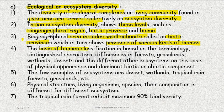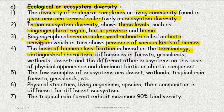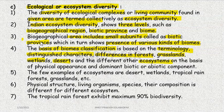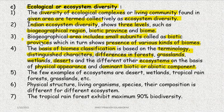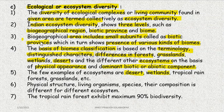The basis of biomes is distinguished characters — differences in forests, grasslands, wetlands, deserts, birds, and different other ecosystems. They are classified on the basis of physical appearance and the dominance of the biotic component. Like we get the Sundarbans delta, backwaters, mangroves, evergreen forests, deserts, wetlands, tropical rainforests, and grasslands — these are all examples of ecosystems.